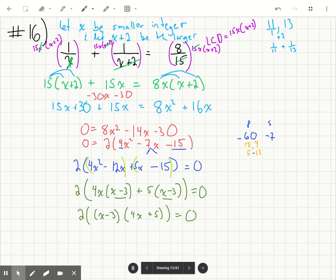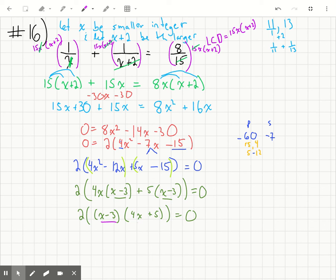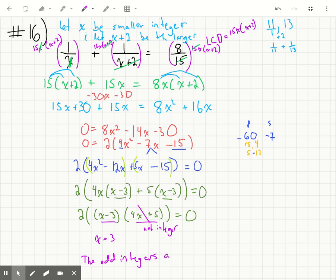So using the zero product property, either this has to be 0 or this part has to be 0. Now, if we make this part 0, you can see it's not going to be an integer. So that's not an integer. I saw that right away. But, you know, you could play with it. You could go ahead and try it. So that means that x has to be equal to 3. That is an odd integer. So because we said before that this is the smaller integer, the odd integers are 3, and then the next one is 5.